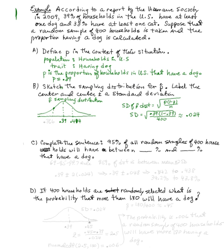On the other side, the same distance gives 0.366. This is the sketch of the P-hat sampling distribution. Think of it as taking many random samples of 400 households each, finding the sample proportion for each, and piling them on a number line — this is the way the pile would look. That helps us complete the next sentence: 95% of all random samples of 400 households will have between blank percent and blank percent that have a dog.